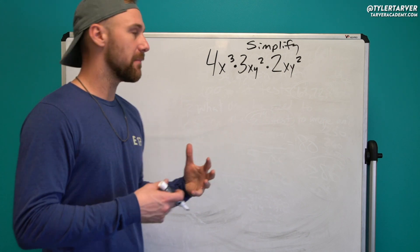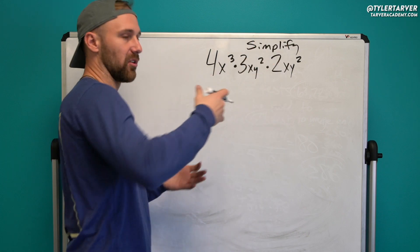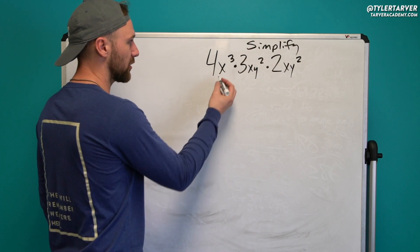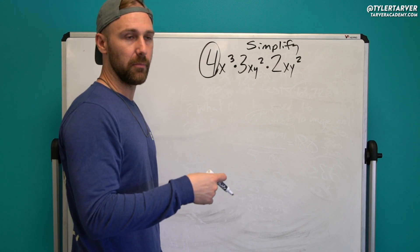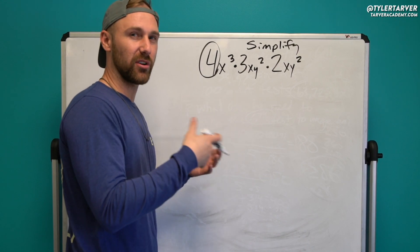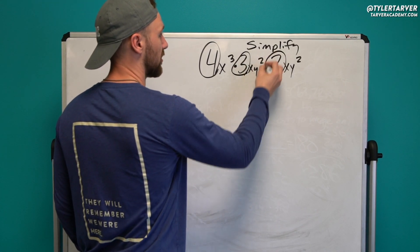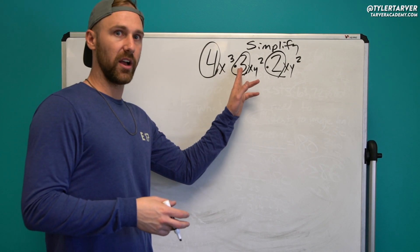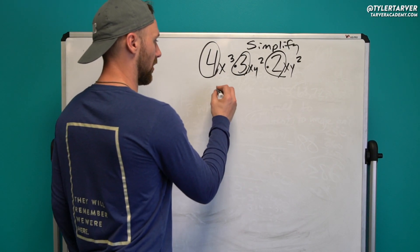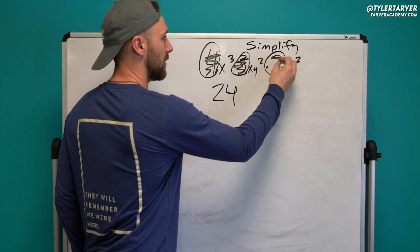It's essentially you just take each part that is similar and you multiply. So let's start with the regular numbers. I'm gonna circle stuff as I work it because that way I can mark it out and make sure I don't leave anything behind. So 4 times 3 times 2, we're just gonna multiply the regular numbers: 4 times 3 is 12, times 2 is 24.